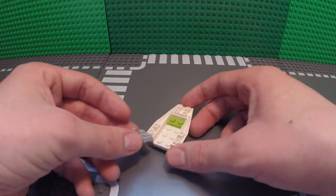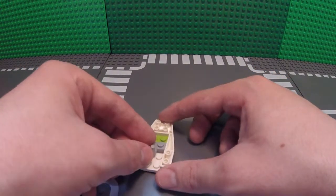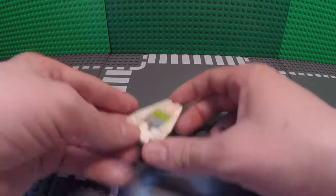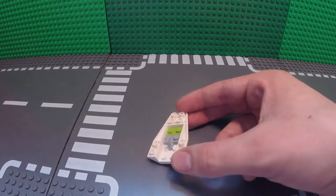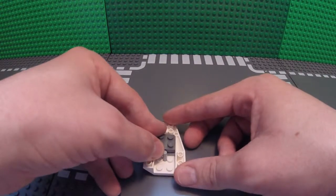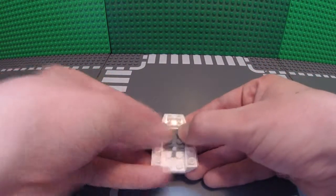Now take your 1x2 with the little pole on the side and place it right here in front of it. Take one of your 2x2 plates and place it right on top.